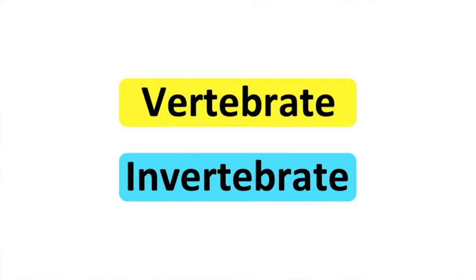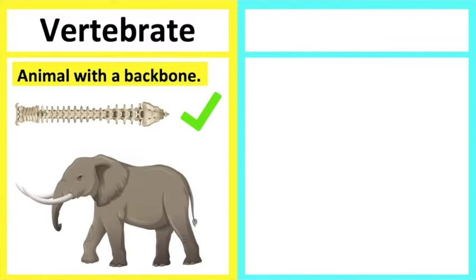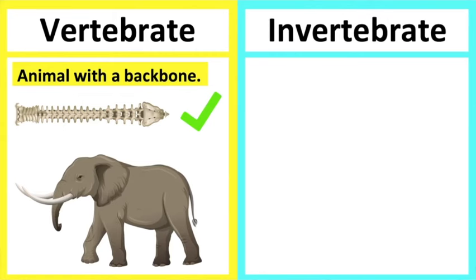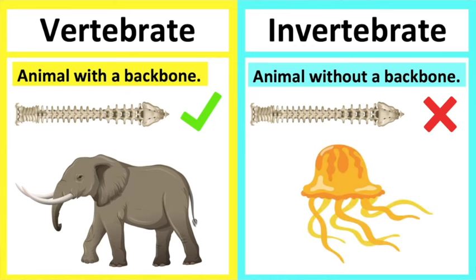Vertebrates are animals with a backbone — for example, elephants. Invertebrates are animals without a backbone — for example, jellyfish.